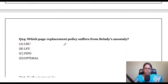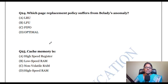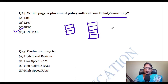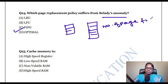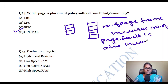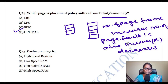Which page replacement policy suffers from Belady's anomaly? It is FIFO. Belady's anomaly: when I increase page frames from three to five, I expect page faults to decrease, but that is not always the case. When the number of page frames increases, the number of page faults may also increase — such a situation is called Belady's anomaly.